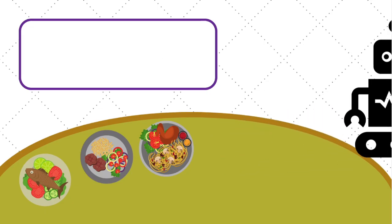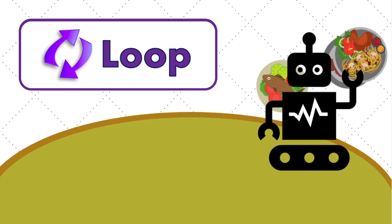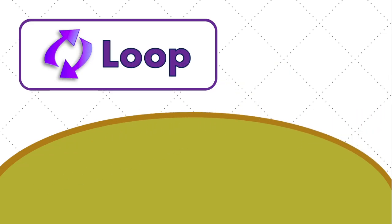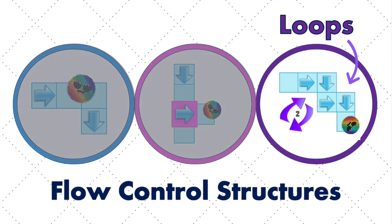Fortunately, there is a way to tell a computer to repeat an action without needing to repeat all the code. This command is called a loop. In programming, loops are the third of the flow control structures and allow us to use just one command to repeat the same process multiple times and complete a task.